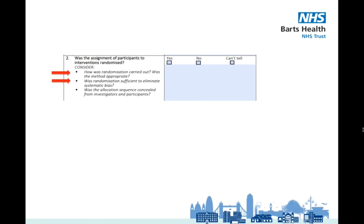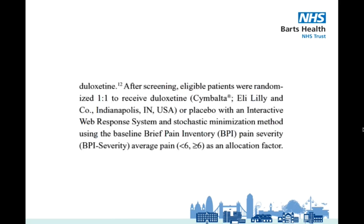The authors of a paper should always report how participants are randomised in their study design or methodology section. This is reported in our study in the materials and methods section on page 810. They write: after screening, eligible patients were randomised one-to-one to receive delexitine or placebo with an interactive web response system and stochastic minimisation method, using the baseline brief pain inventory pain severity average pain as an allocation factor.